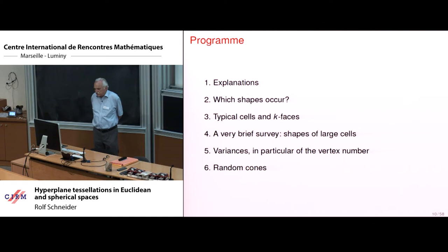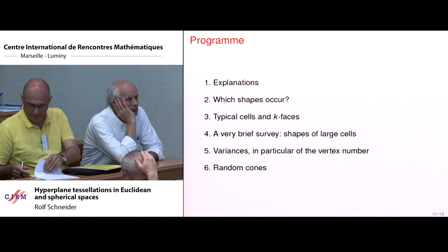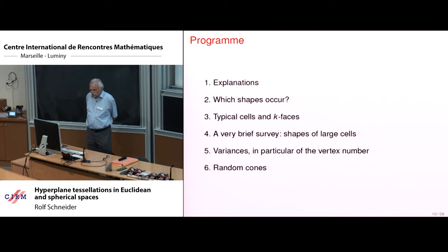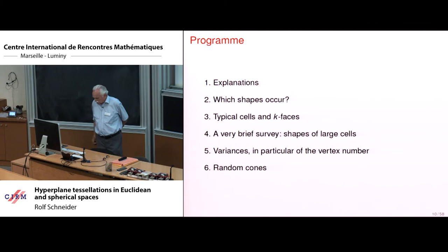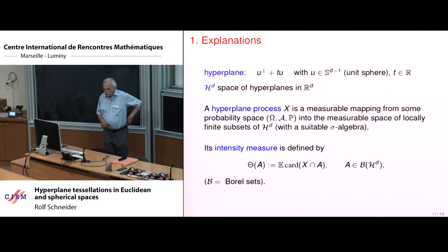The program would be: some necessary explanations in the beginning, then which shapes do occur at all, then a brief reminder of typical cells and typical k-faces of our random mosaics. When I talk about shapes, I must recall shapes of large cells, and I might restrict myself to a very brief survey here. The main points then will be variances, in particular of the vertex number, and finally the spherical counterparts of random cones.